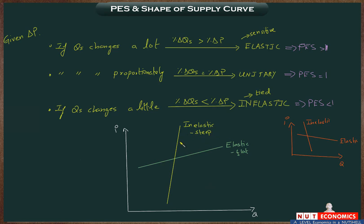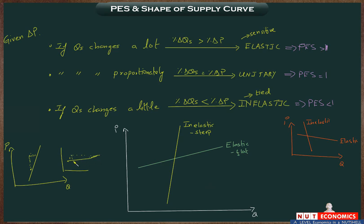This is a useful way of thinking about supply and elasticity: flatter means elastic, steeper means inelastic. Graphically, when we say a steep supply curve means inelastic supply, starting from any point, if price increases, the quantity supplied — the amount by which you move to the right — is not that much. Whereas with a very flat supply curve, a small price increase leads to a large increase in quantity supplied. So memorize: flatter means elastic, steeper means inelastic.